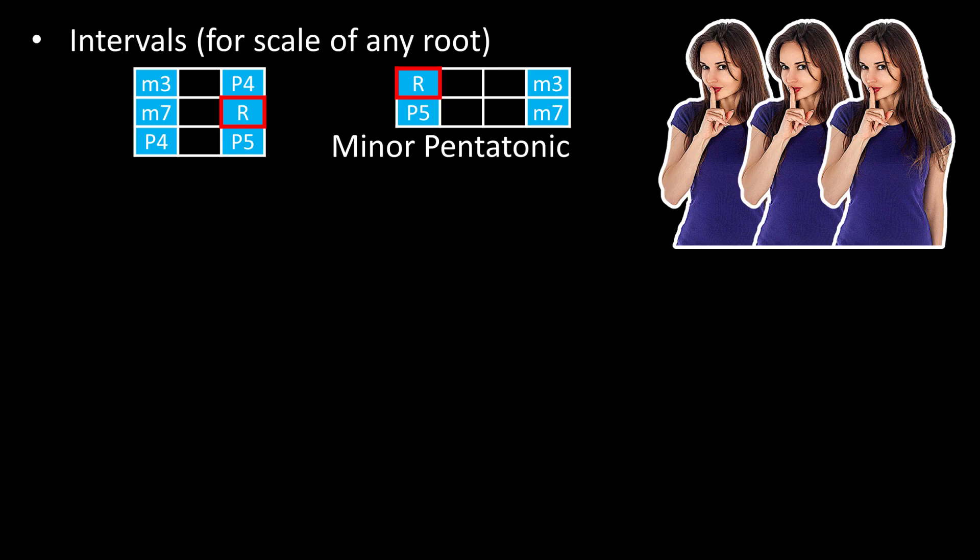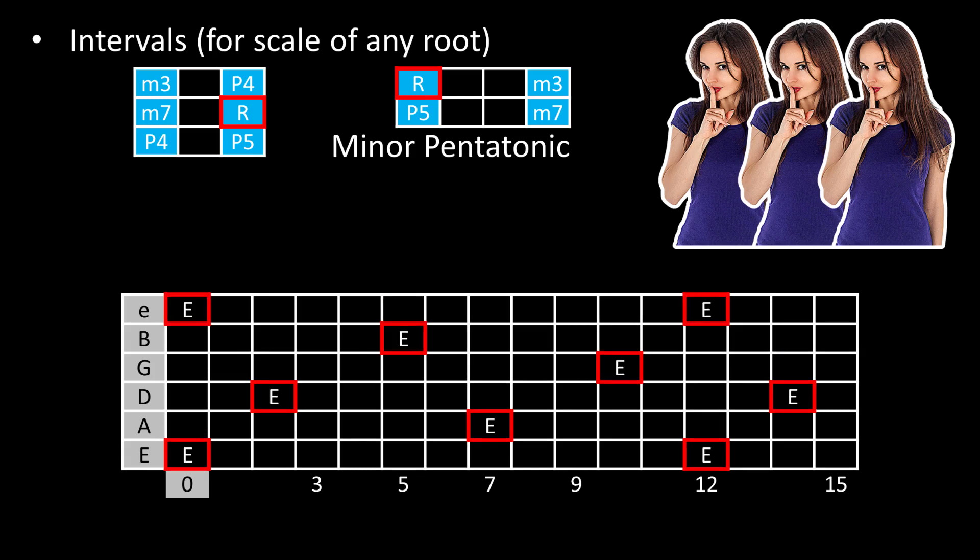Then, if we're in the key of A, we hang them on the A root notes. If we're in the key of E, we hang them on the E root notes. And so on. Congratulations! You can now visualize the minor pentatonic scale in any key.